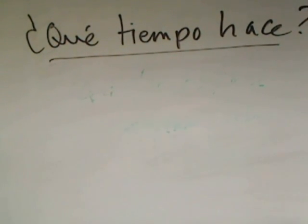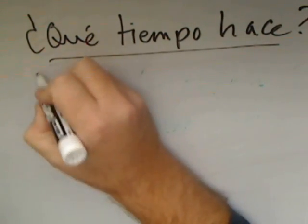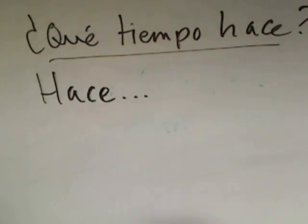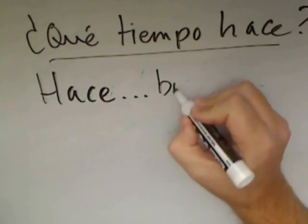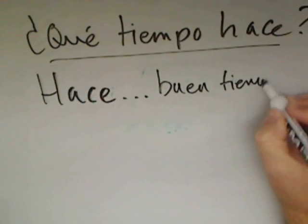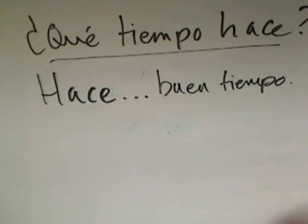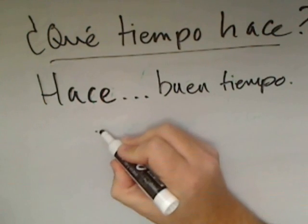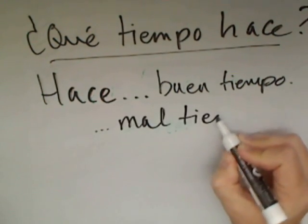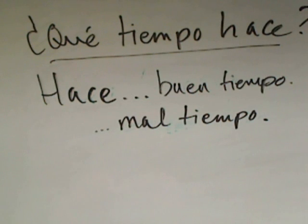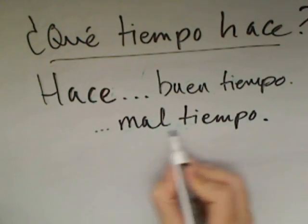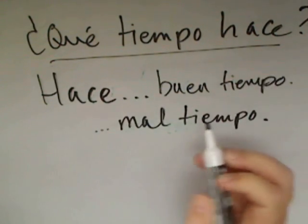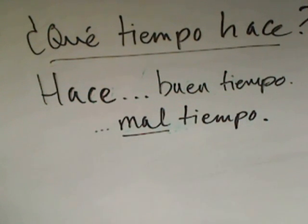Let's look at how to respond with hacer first. ¿Qué tiempo hace? The formulaic response is to say hace followed by one of the following. Hace buen tiempo — the weather is nice. Hace mal tiempo — so if the weather is bad outside, as it is right now; it's very cloudy, it looks like it's going to rain, and I want to say the weather's bad. Somebody asks ¿Qué tiempo hace? Hace mal tiempo — the weather's bad.